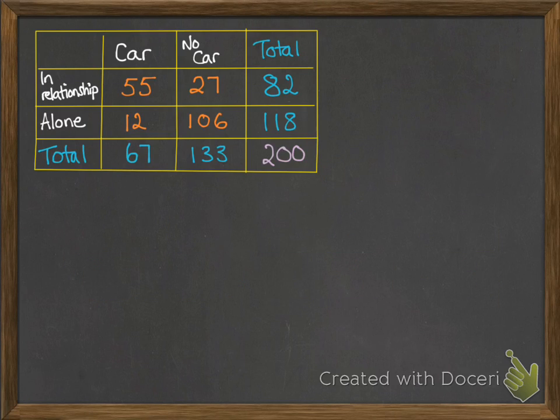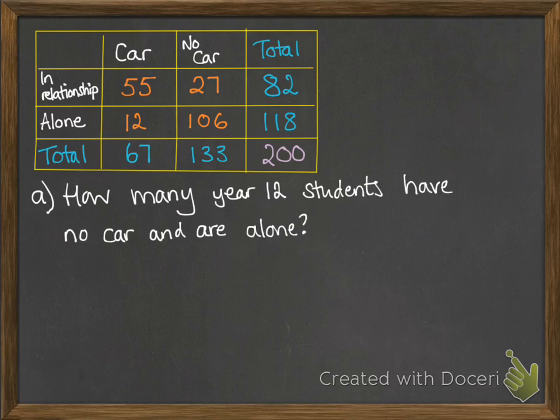Right, so now we've got the table done, we could be asked some questions about this. So for example, how many year 12 students have no car and are alone? You want to read down the no car column and across the alone row and see where they match up. So that's 106.